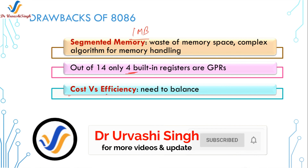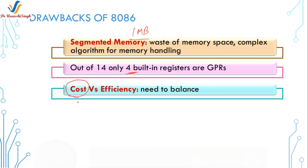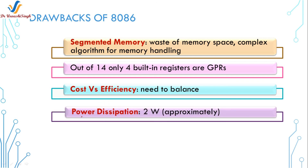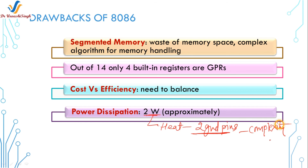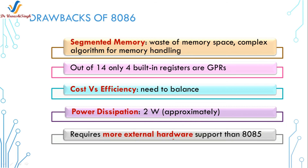The next drawback is the need to balance cost and efficiency: the 8086 is more costly than earlier processors, but the expected efficiency was not fully delivered. Next is power dissipation: the 8086 dissipates approximately 2 watts of power, which increases heat — that's why 2 ground pins are provided in the IC. Having 2 ground pins among the 40 pins increases the complexity of the architecture. Additionally, the 8086 requires more external hardware support than the 8085, which makes it bulkier in comparison.